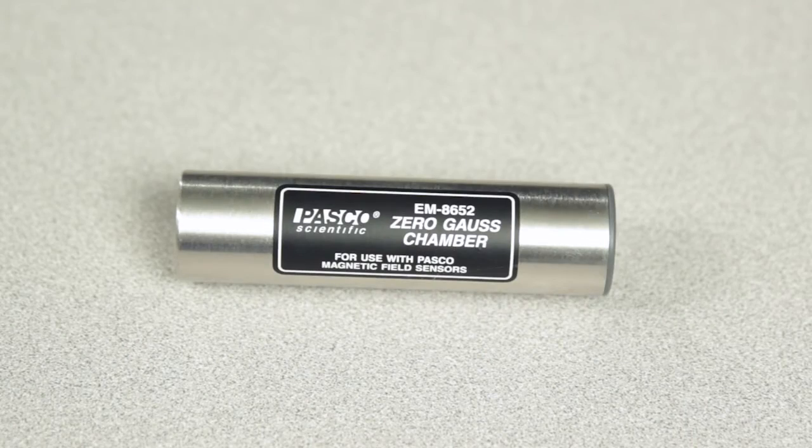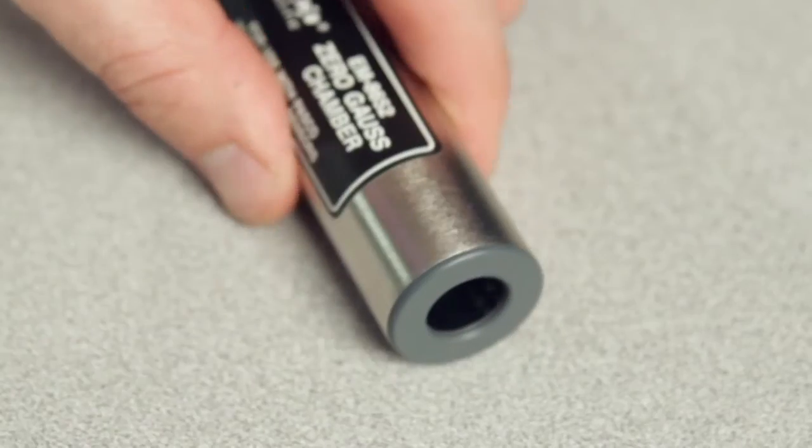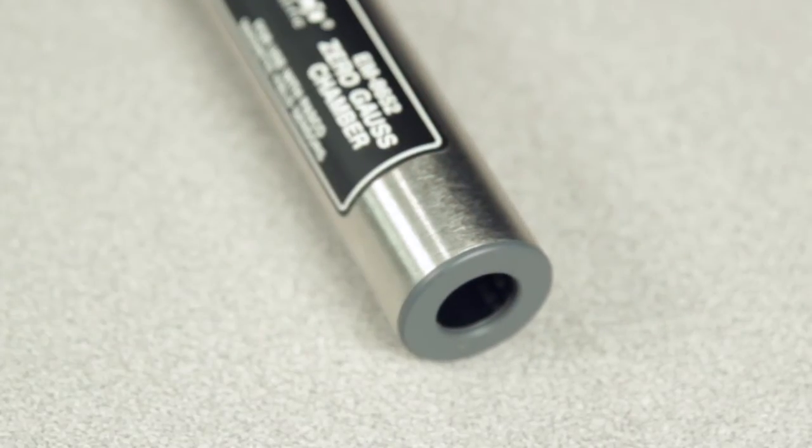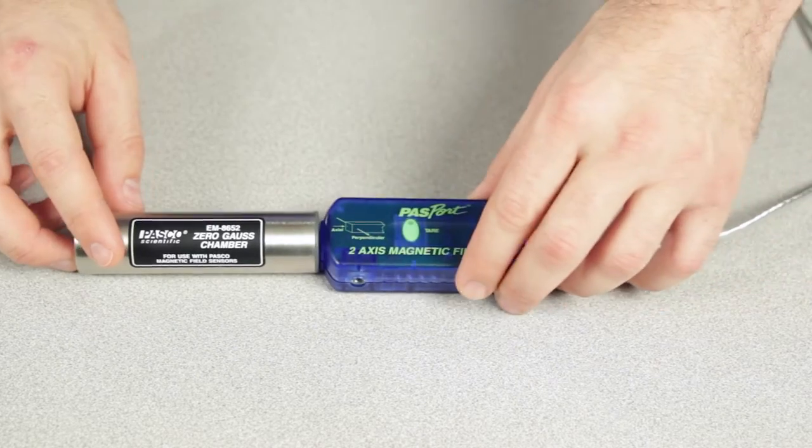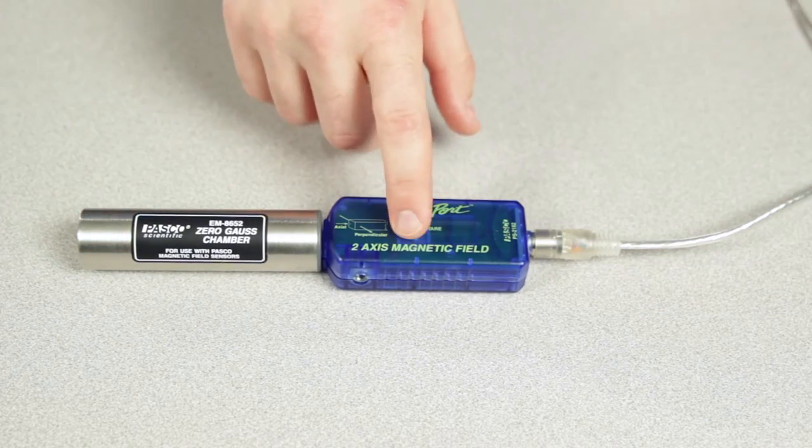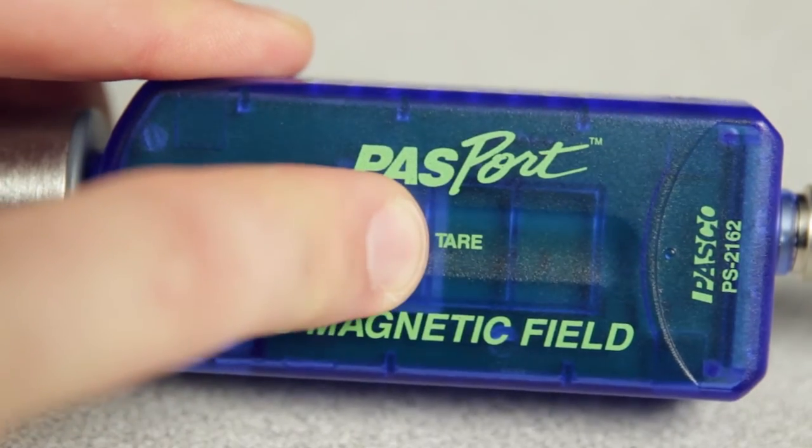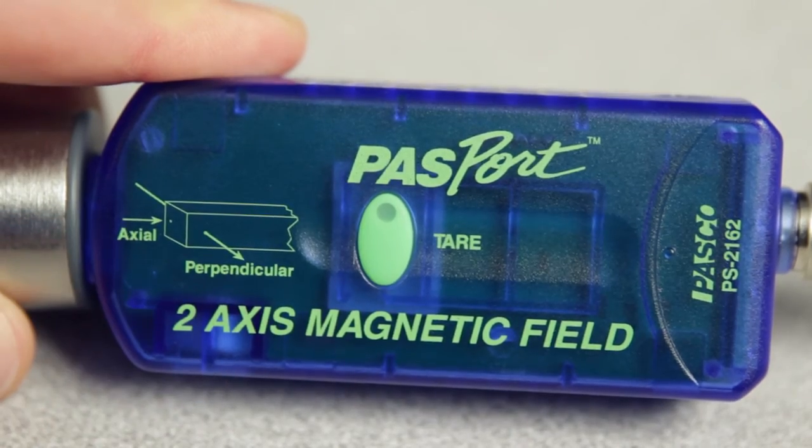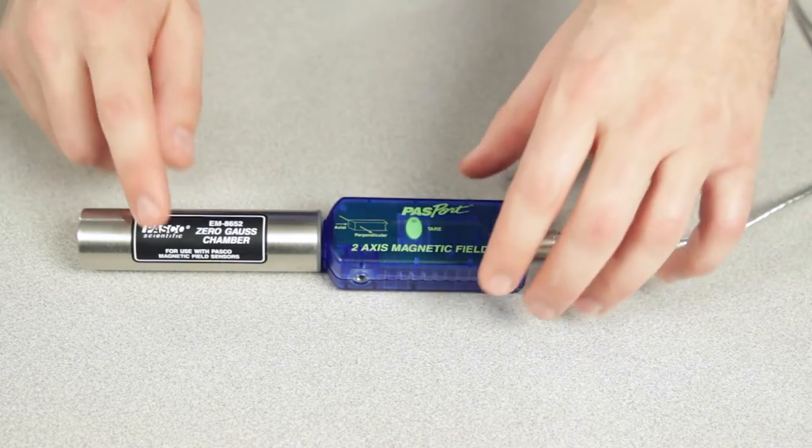Not included with the sensor is the optional 0 Gauss chamber that can be used in conjunction with the sensor's tare function. The double-walled high permeability metal chamber produces a 0 Gauss field within it. By placing the magnetic field sensor probe into the chamber and pushing the tare button, the measured magnetic field strength value can be reset to 0.